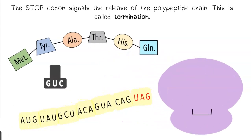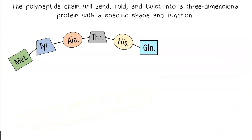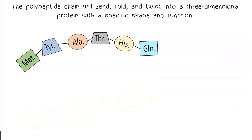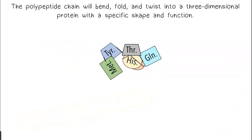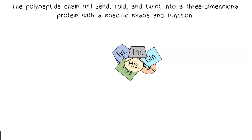The stop codon signals the release of the polypeptide chain. This is called termination. The polypeptide chain will bend, fold, and twist into a three-dimensional protein with a specific shape and function.